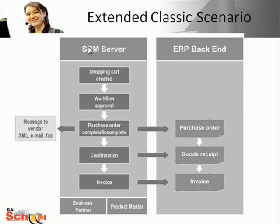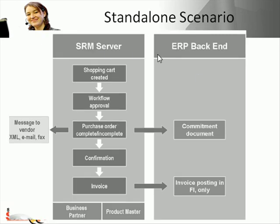In the Extended Classic Scenario, the purchase order is created locally within the SRM server. If the data in the shopping cart is insufficient to complete the purchase order, this data is supplemented manually within SRM before being transferred to the backend ERP system. The PO in SRM is the leading PO, so SRM is the leading system for the purchase order. Goods receipts and invoices can still be entered in either system.